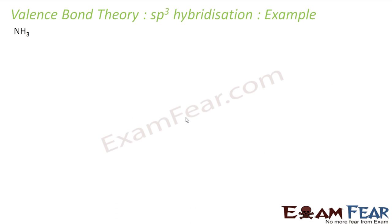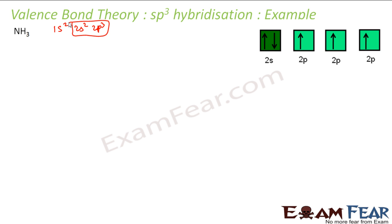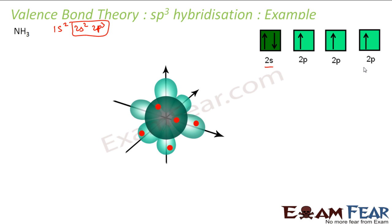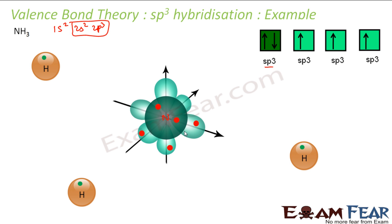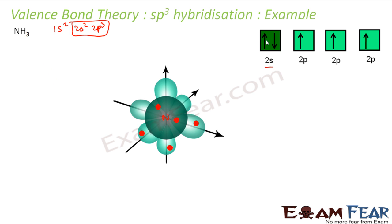Let's take more examples of SP3 hybridization. Nitrogen has atomic number 7, so its electronic configuration is 1s2, 2s2, 2p3. We'll consider the outermost valence shell: 2s2 and 2p3. The 2s2 orbital has two electrons, and the three 2p orbitals each have one electron. There is no transfer of electron here — it just goes directly to SP3 hybridization.